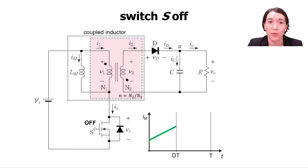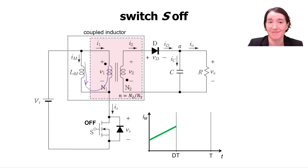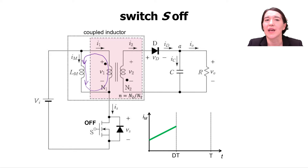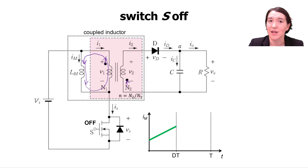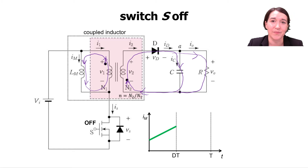When the switch turns off, the magnetizing inductor current can't stop instantaneously, so it can't go through the switch anymore. The only path is through the transformer to the output side. Current flows out of the dot on the primary side and into the dot on the secondary side, forward-biasing the diode, allowing current to flow into the capacitor and through the load resistor.